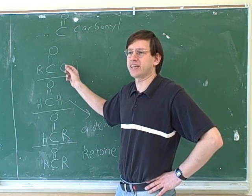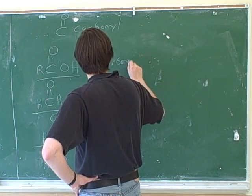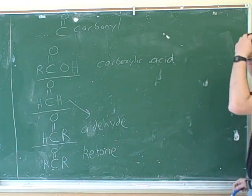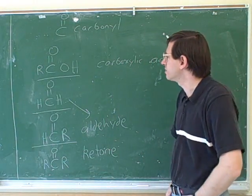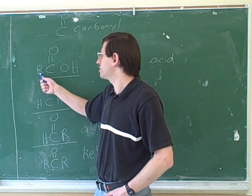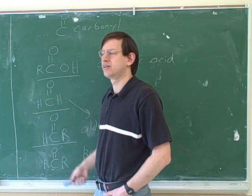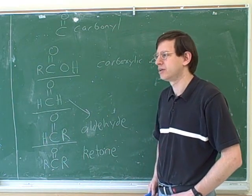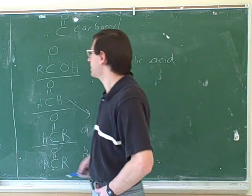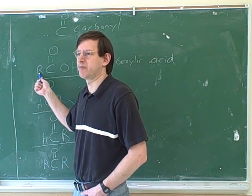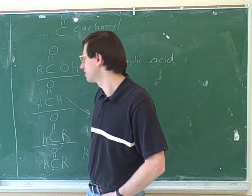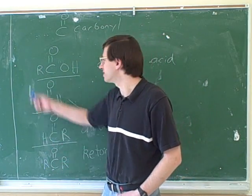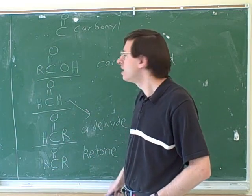Earlier someone mentioned the carboxylic acid — this is what it looks like. A carboxylic acid is a carbonyl carbon attached to a carbon chain and a hydroxy group. Technically, the side opposite the OH could be a hydrogen or a carbon chain, but those carbon-chain examples are the standard cases.